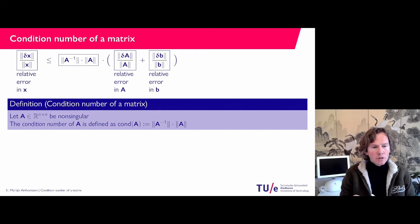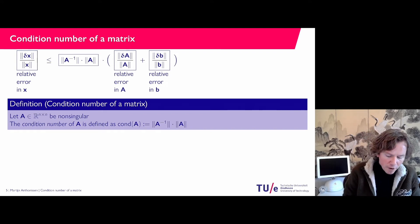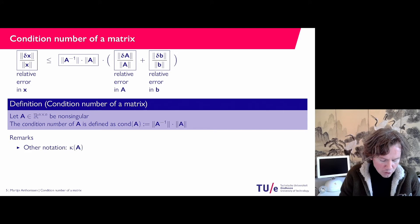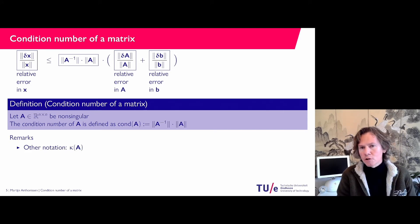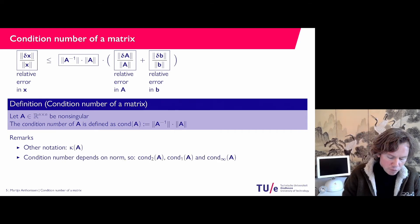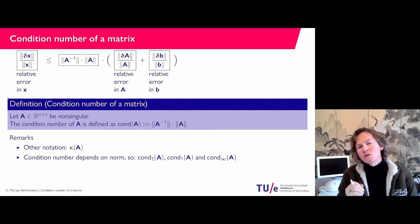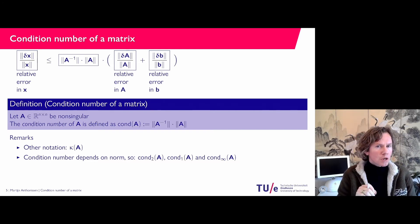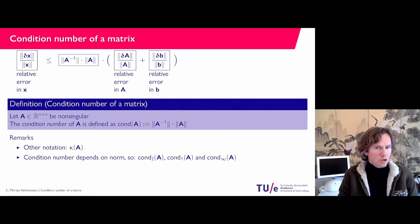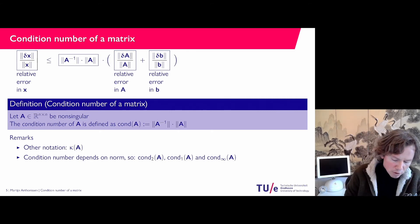This number is important and it has a name — it's called the condition number. For any non-singular square matrix you can define it: cond(A) equals the norm of A inverse times the norm of A. Regarding notation: the Greek letter kappa is also often used for the condition number. It depends on the norm you use — it can be the 2-norm, the 1-norm, or the infinity norm — and all of these give a different condition number.